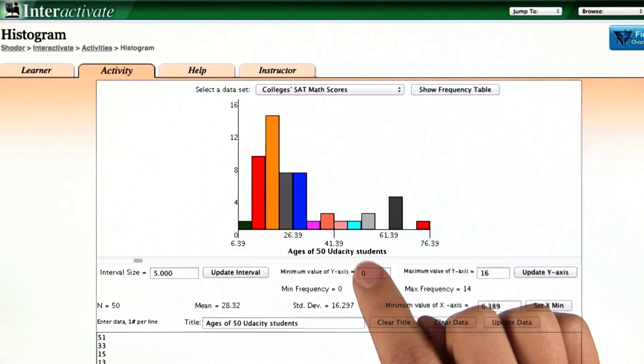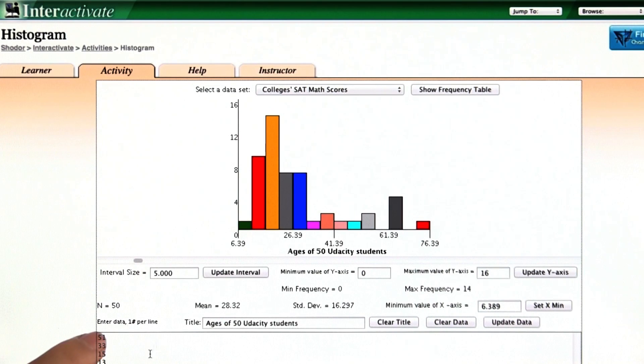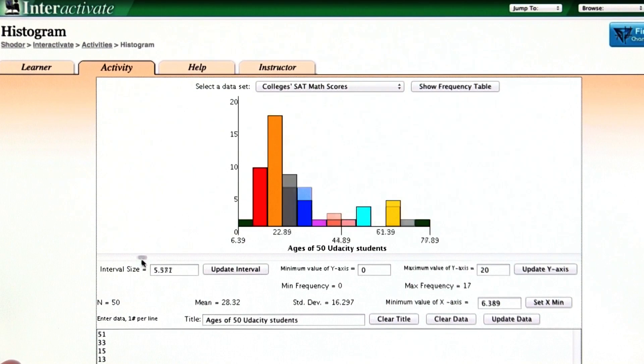This is Interactivate Histogram software, which I really like. You can just input the data here, and then you can see how the shape of the histogram changes when you change the bin size.